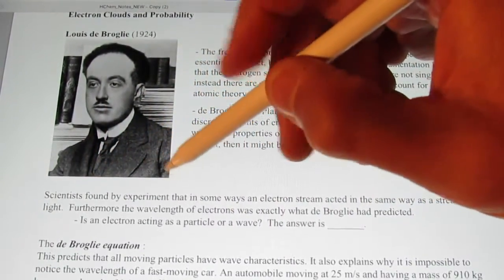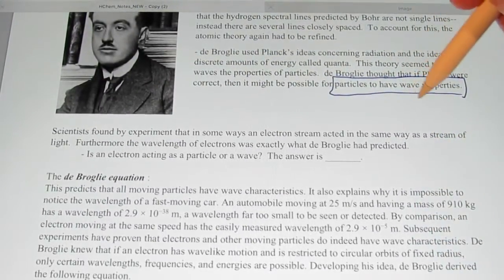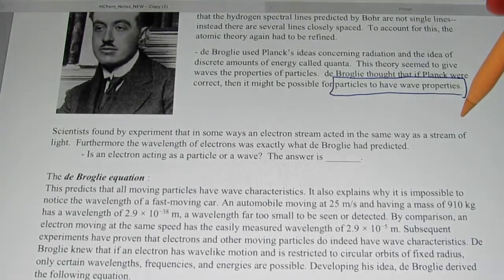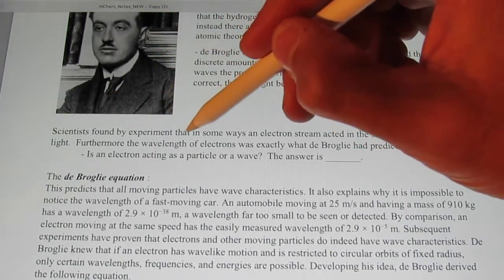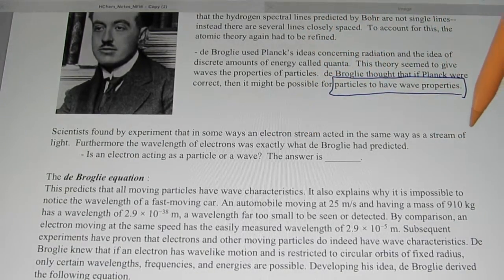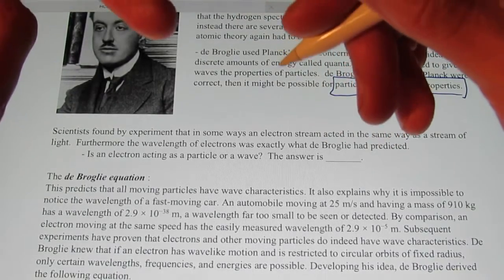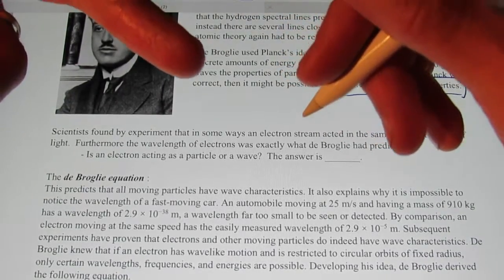Scientists found by experiment that in some ways an electron acted in the same way as a stream of light. Furthermore, the wavelength of electrons turned out to be exactly what de Broglie had predicted. So we have this important question that we're going to try to answer now. In fact, you might not like my answer, but we're going to answer it anyway.